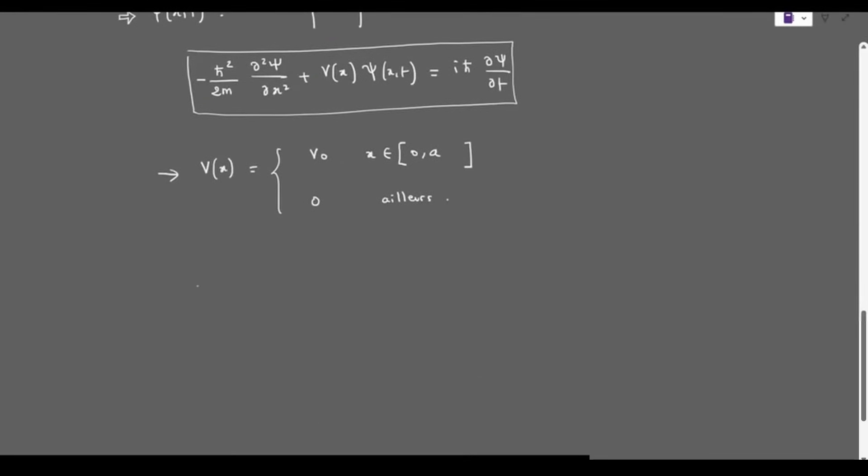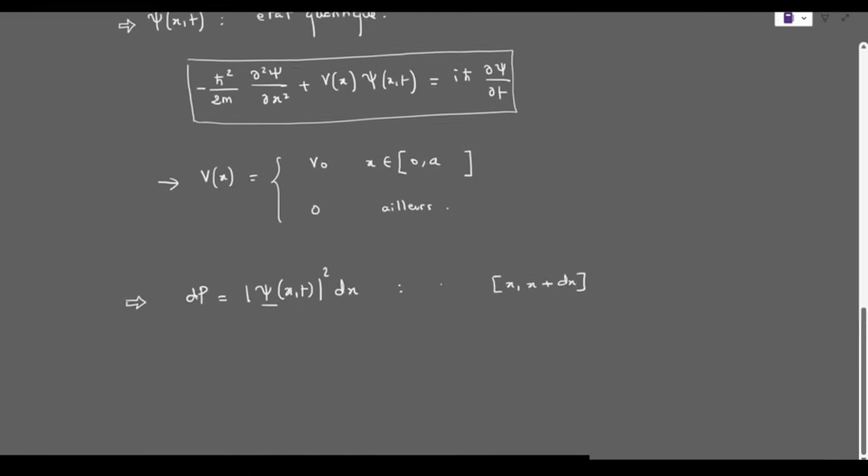For a free quantum particle, the interpretation of ψ is that dP equals the squared modulus of ψ times dx, which corresponds to the probability of finding the particle in an interval x and x plus dx. This interpretation was introduced by Max Born.